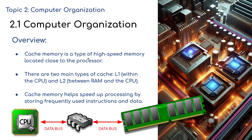First of all, we need to know that cache is a type of high-speed memory located close to the processor. The CPU has two main types of cache: level 1, which sits within the CPU, and level 2, which sits between the RAM and the CPU. Cache memory helps speed up processing by storing frequently used instructions and data.